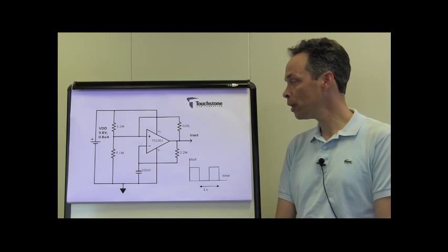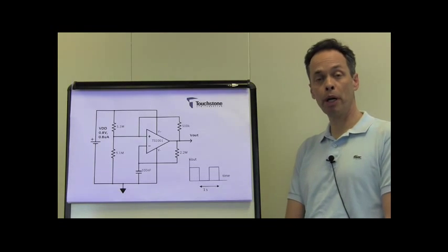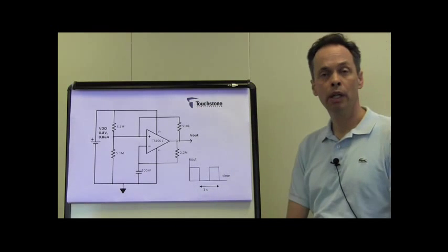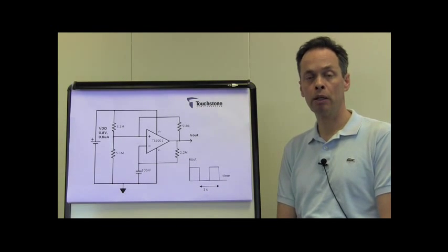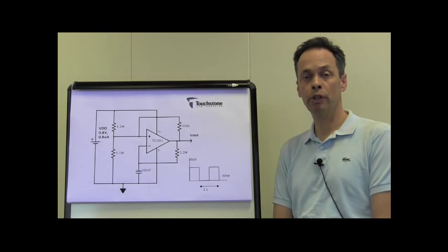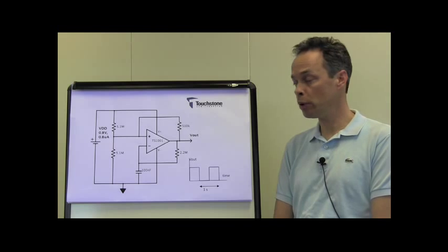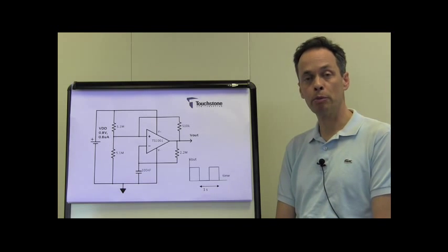In this first example, the op-amp is used as a comparator, which means that the output is either railed high or low. For most operational amplifiers, when they're used in that manner, the supply current may show a significant increase, but the 1001 is designed in such a way that even when the output is railed, the supply current remains very low.